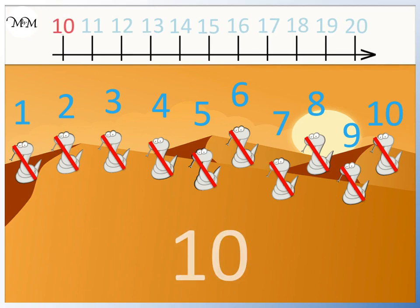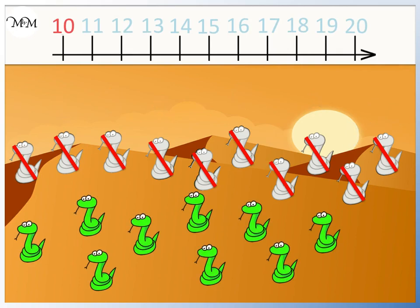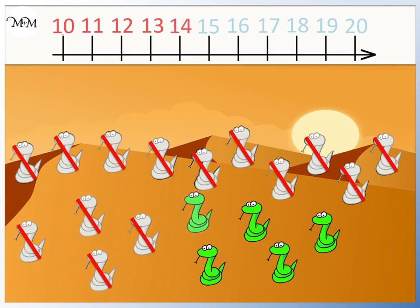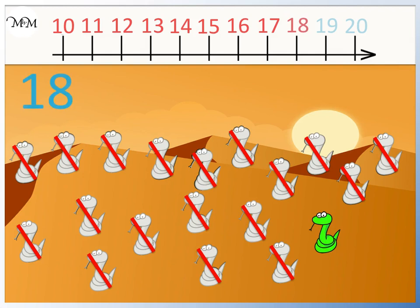Some more snakes appear. We can count on from 10. There are 11, 12, 13, 14, 15, 16, 17, 18, 19.